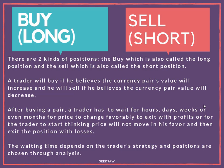The buy can also be called the long; the sell is also called the short. A trader will buy if he believes the currency pair value will increase, and he will sell if he believes the currency pair value will decrease. After buying a pair, a trader has to wait for hours, days, weeks, or even months for the price to change favorably — either to take profits or because the losses have become too much.